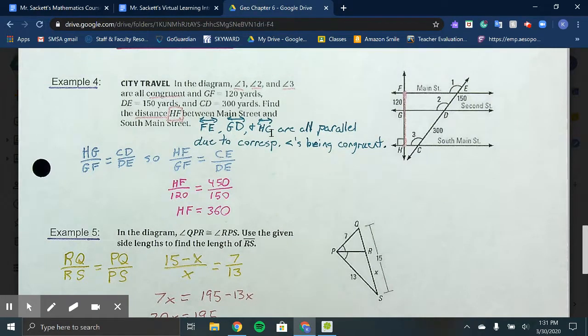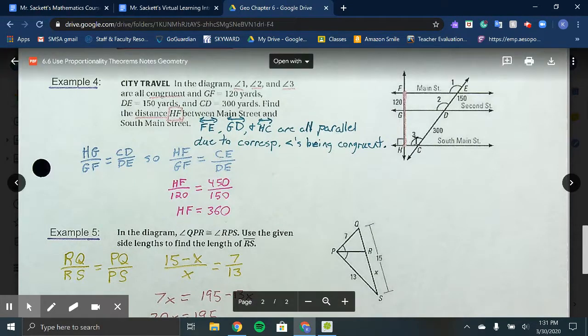In that case, we can state HG over GF equals CD over DE, which also means HF over GF equals CE over DE. HF is the whole side, GF is the small segment, CE is the whole distance, and DE is that small segment.